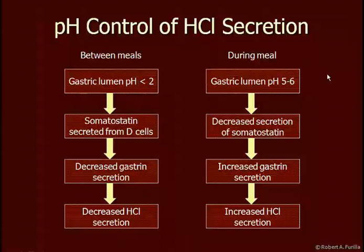During the meal, the food and drink you are ingesting neutralizes the acids in the stomach, raising the pH up to 5 or 6. This decreases somatostatin secretion, which then increases gastrin secretion, and the high pH directly affects gastrin secretion. So gastrin secretion rises, and acid secretion then also rises to try to bring the pH back down.